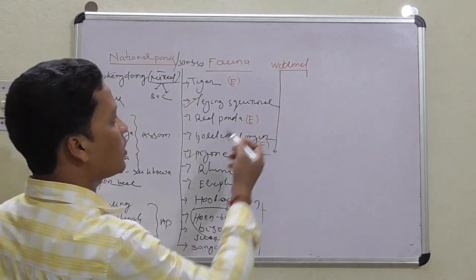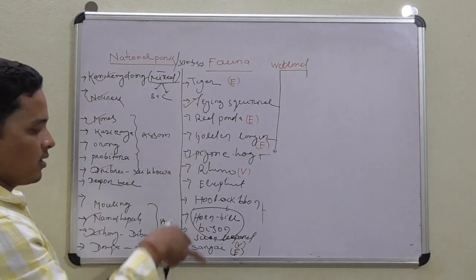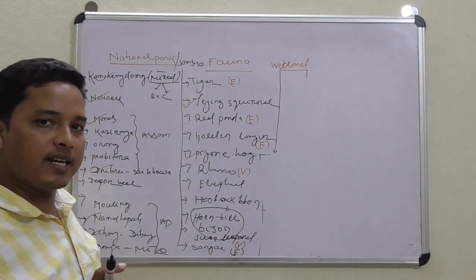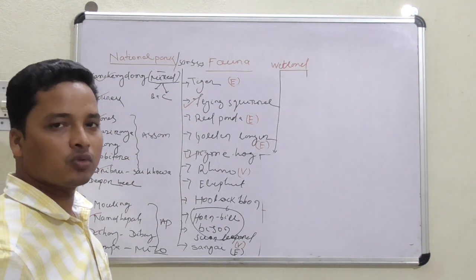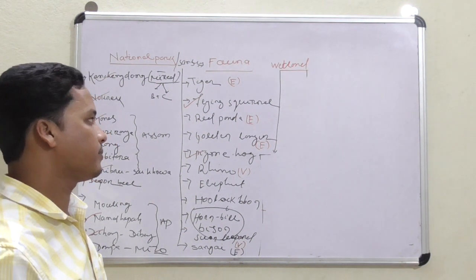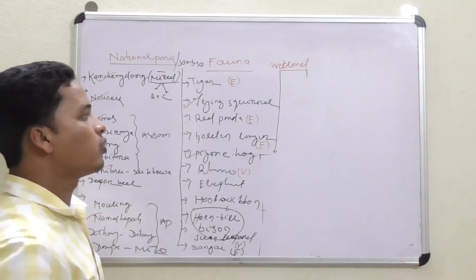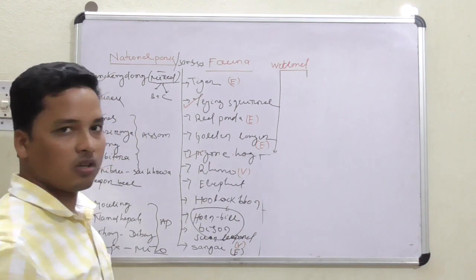The fauna which is red ticked are critically endangered fauna. Some portion of the environment would be covered like this. Flying squirrel is found in Orang and Namdapha. This is critically endangered.